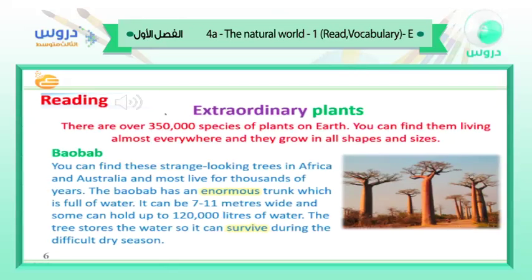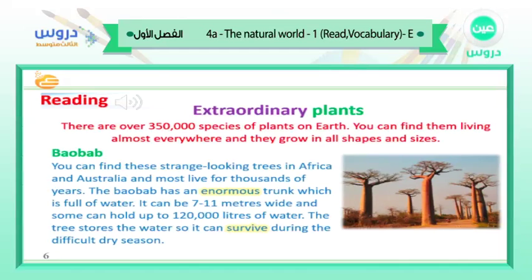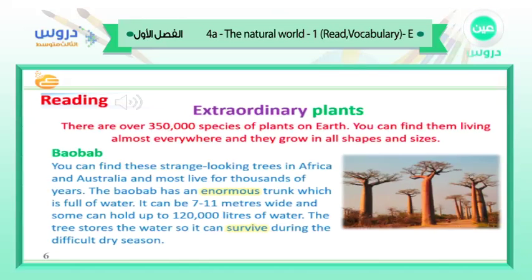Module 4, Nature. 4A: The Natural World. Read the four facts below — one of them isn't true, can you guess which one it is? Then listen, read and check your answers. Extraordinary plants: there are over 350,000 species of plants on earth. You can find them living almost everywhere and they grow in all shapes and sizes.